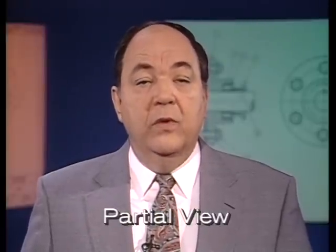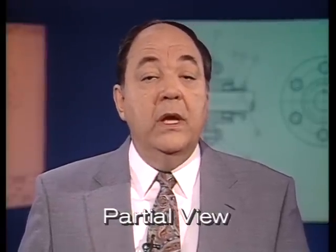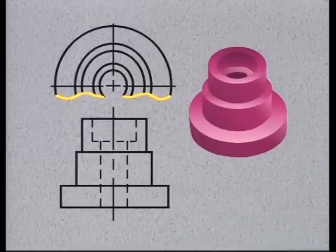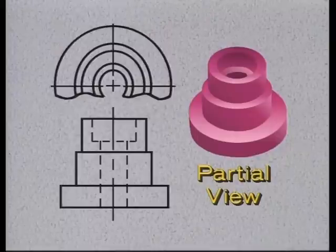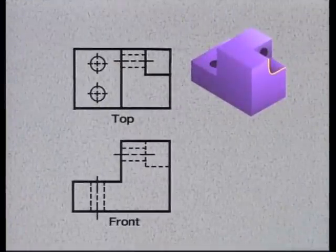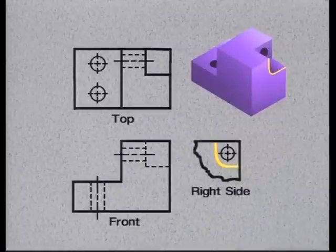A partial view is sometimes used in place of a complete view to save space or to simplify the drawing. For example, here is a partial view of the top of this part. A break line indicates where the view is broken off. Since the part is symmetrical, a partial view showing half the part is sufficient to describe its shape and size. Partial views are also used to clarify a feature without having to resort to another complete view. For example, in this drawing, it appears as though these edges are at right angles to each other, but a partial right side view reveals that they are, in fact, curved.